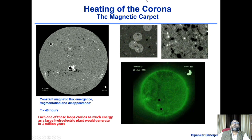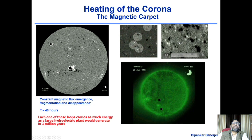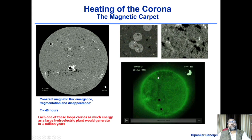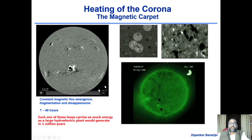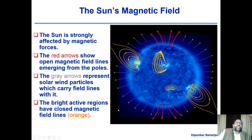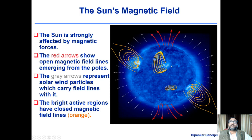Because of the dynamic behavior of these small little concentrations, they generate certain kinds of waves. These waves go higher up in the atmosphere and generate heating. The sun's magnetic field is strongly affected by magnetic forces. Active regions are connected by closed field lines, quiet regions have different field configurations, and polar regions have magnetic field lines emerging — corresponding to so-called open field lines.